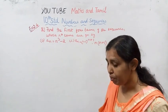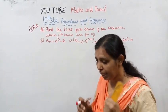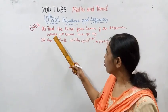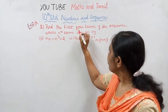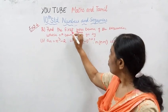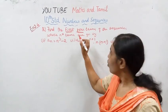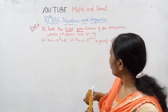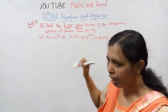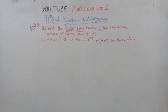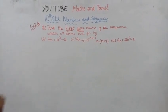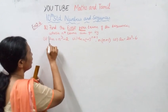Easy A sum. Find the first four terms of the sequence whose nth terms are given by.